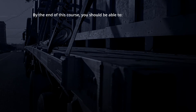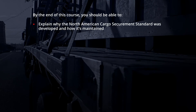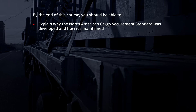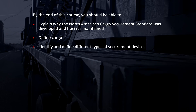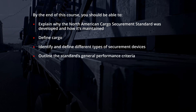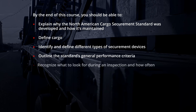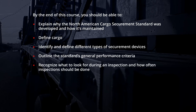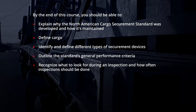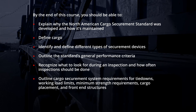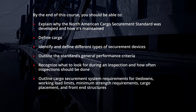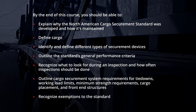This course will instruct you on how to follow the North American Cargo Securement Standard to help prevent incidents like that from happening to you. By the end of this course, you should be able to explain why the North American Cargo Securement Standard was developed and how it's maintained; define cargo; identify and define different types of securement devices; outline the standard's general performance criteria; recognize what to look for during an inspection and how often inspections should be done; outline cargo securement system requirements for tie-downs, working load limits, minimum strength requirements, cargo placement, and front-end structures; and recognize exemptions to the standard.